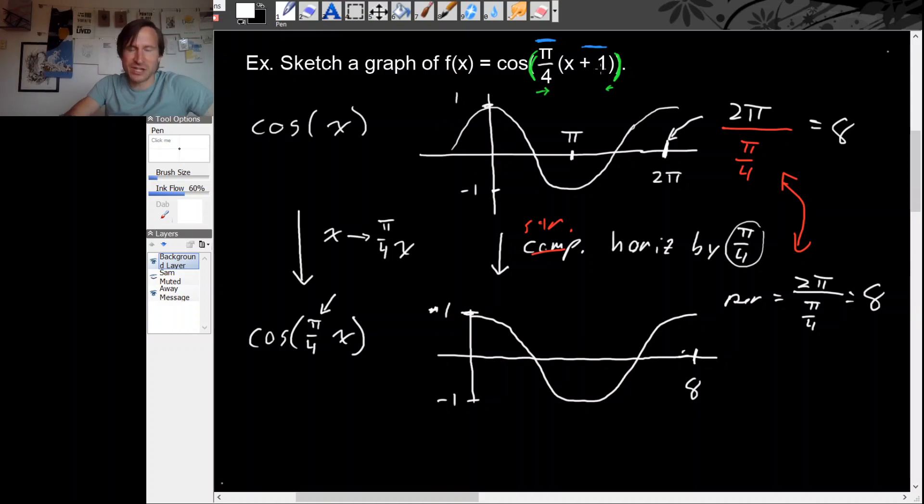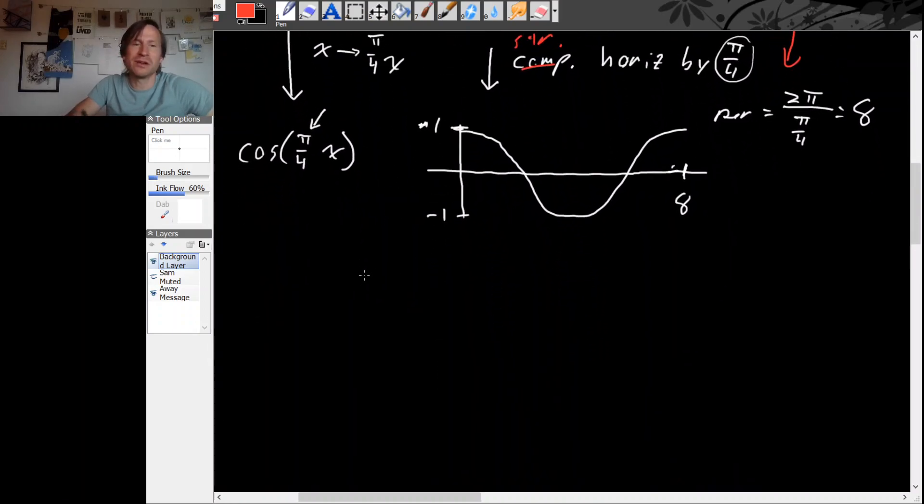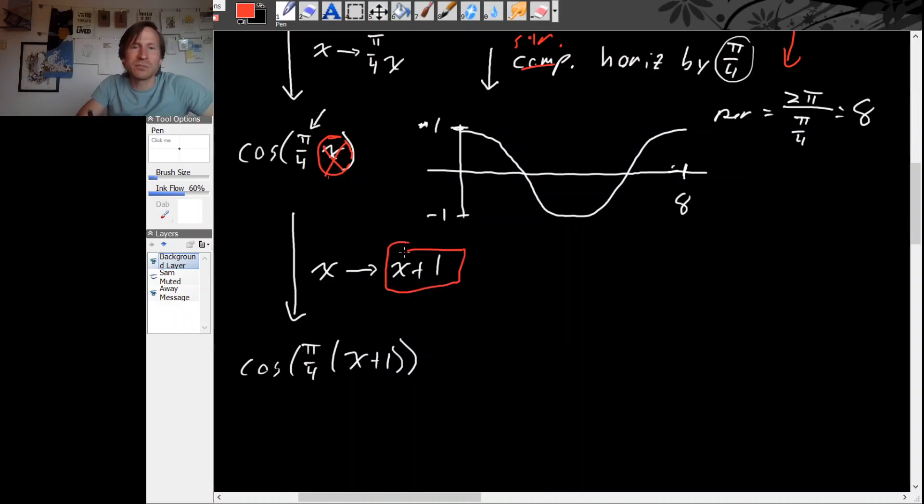Now the next operation we need to do should make this plus 1 appear. And to make the plus 1 appear, in the formula we need to replace x with x plus 1. So that gives us cosine pi over 4 times x plus 1. And notice that I'm writing parentheses here because this entire chunk here, this x right here, we're sort of crossing that out, taking this entire x plus 1 and putting it in there.